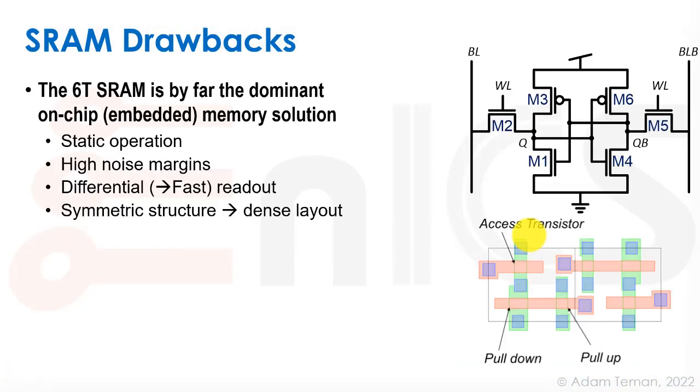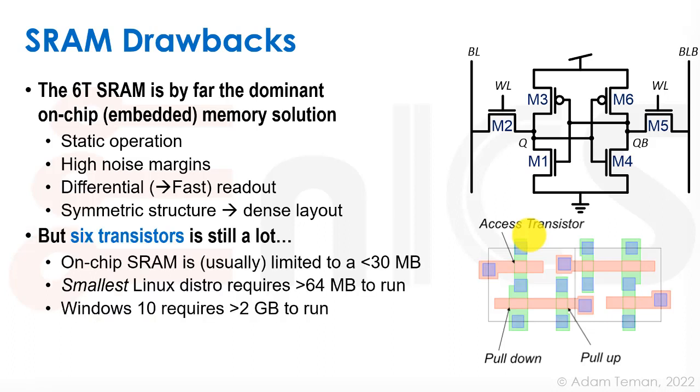A couple of drawbacks about SRAM. The 6T SRAM is by far the most dominant on-chip memory solution, the most dominant memory that we can find on-chip along with our other logic on our CPU itself. It has static operation, high noise margins, differential readout which makes it really fast, and a symmetric structure which gives us a very dense layout. We can also do all kinds of tricks like pushing the design rules to get something that's much more dense than our standard logic.